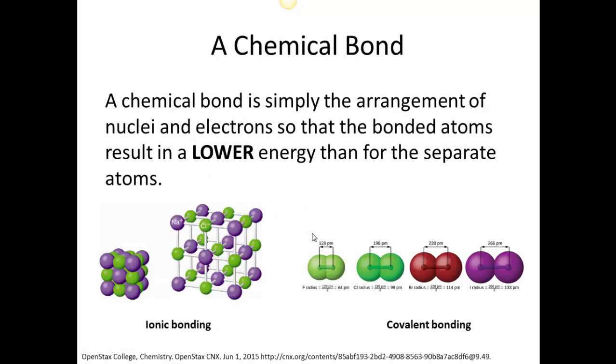The definition of a chemical bond is that it's simply an arrangement of nuclei and electrons such that the bonded atoms result in a lower energy than for the separate atoms. Another way of thinking about this is that the bonding occurs because you're going to a lower potential energy. And there's a couple different types of bonding, ionic bonding and covalent bonding.